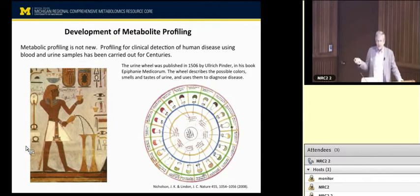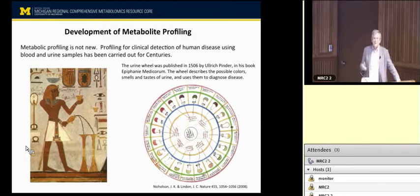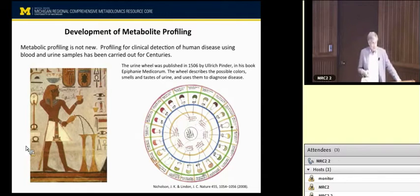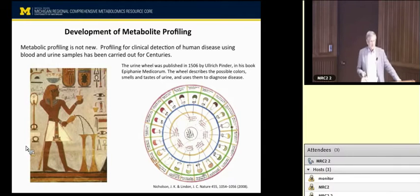Looking back at what people have done before can save you time from doing it again. Metabolomics profiling is not all that new. The Egyptians were able to turn colors in different biological fluids, and they believed that it meant something, just like we do now. We make correlations between our observations.